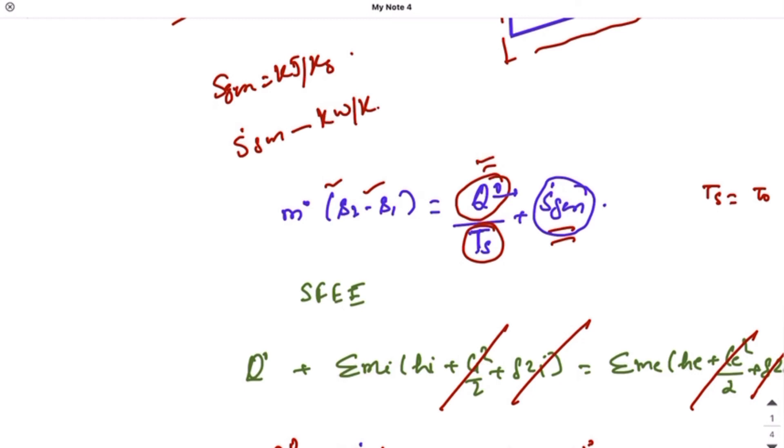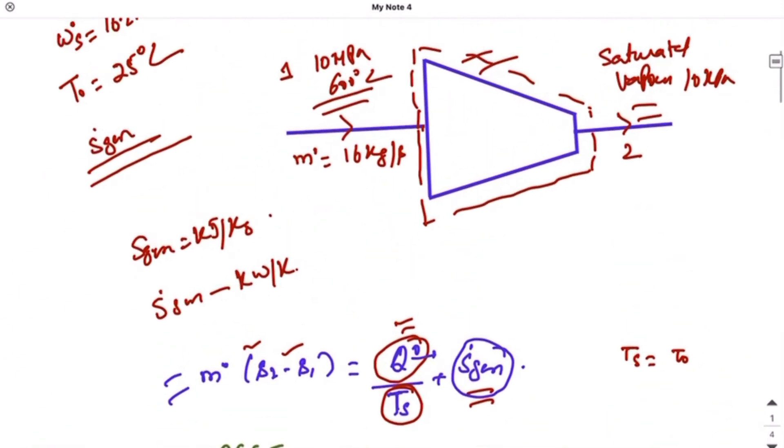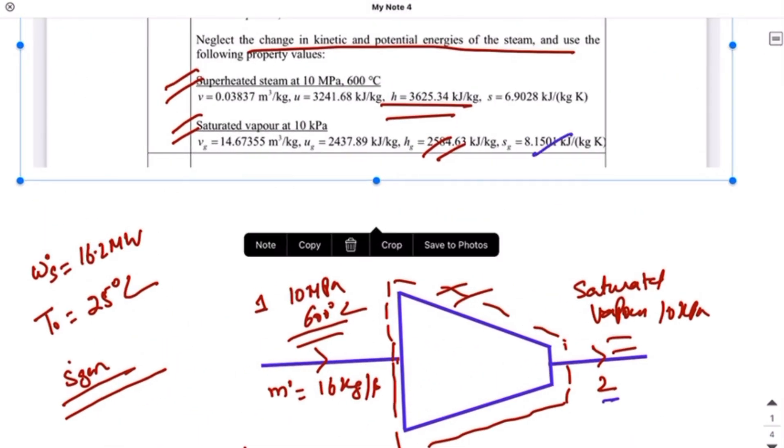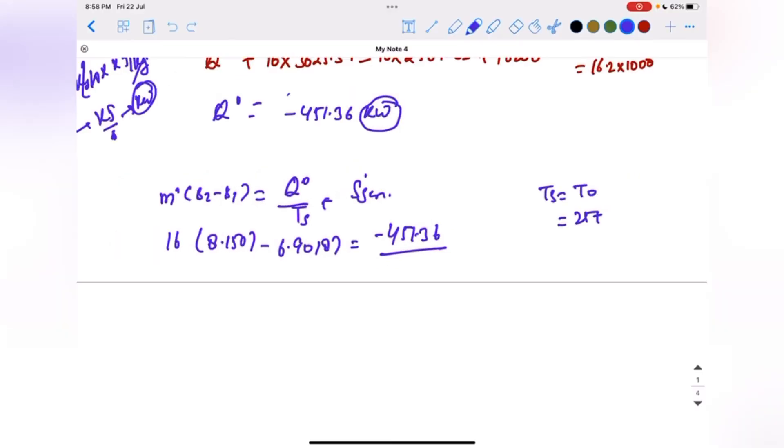Now using this equation again, we can write m dot times (s2 minus s1) is equal to q dot by ts plus s dot generation. s2 is the exit value, this is s1. So I can write 16 into (8.1501 minus 6.9018) is equal to 451.36 upon t naught. ts is equal to t naught and this should be in kelvin, so this would be 25 plus 273, which is equal to 298 kelvin. Plus s dot generation. Now solving this equation, I will be getting s dot generation as 21.4 kilowatt per kelvin.